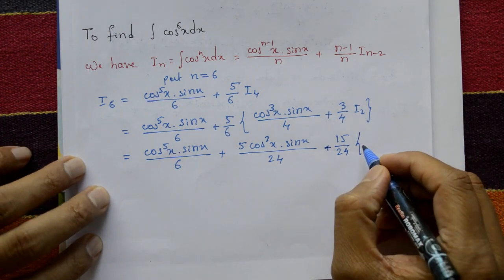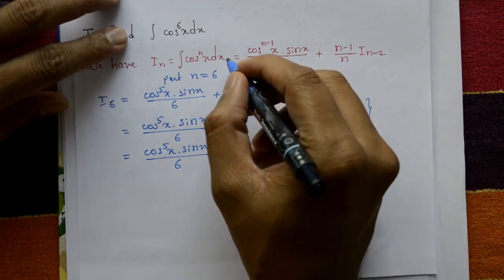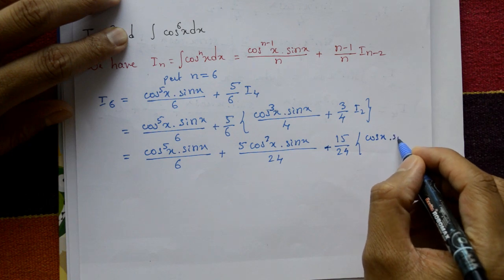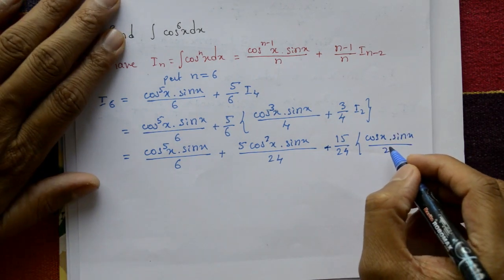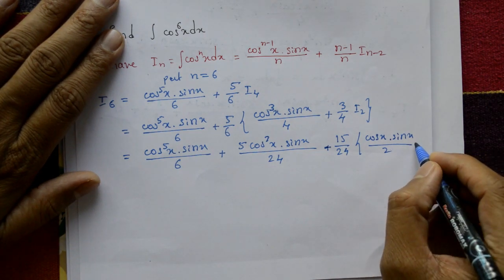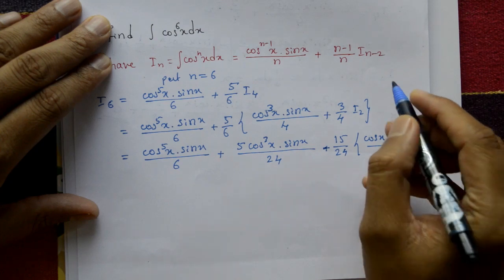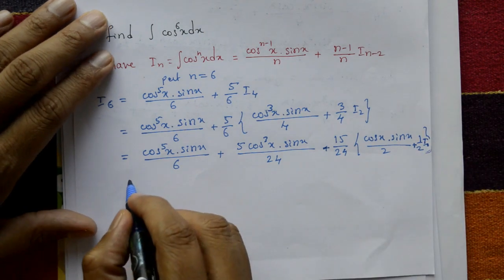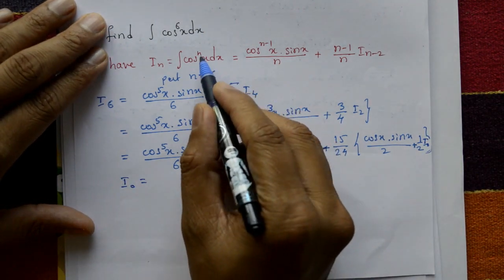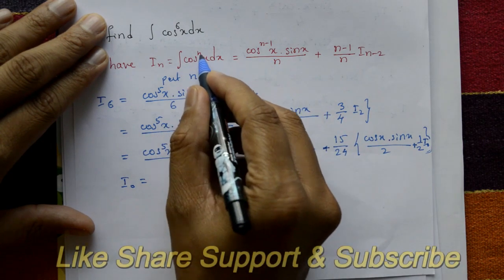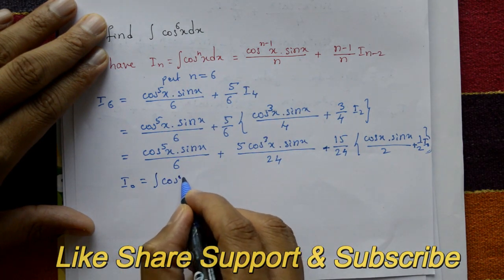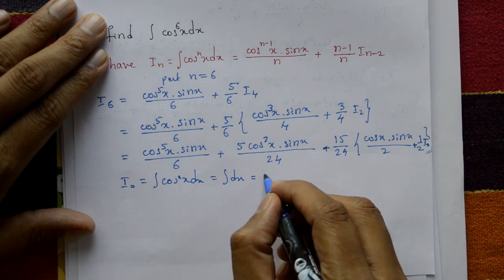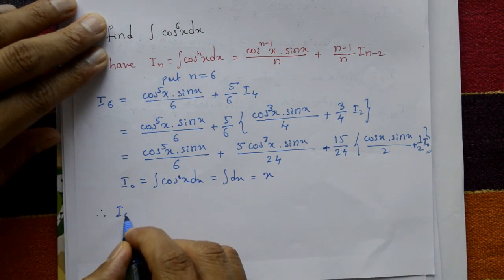Now I_2: put n equal to 2. This gives cos x times sin x divided by 2, plus (1/2) times I_(2-2), which is I_0. Now I_0 means putting n equal to 0, so cos^0 x equals 1, meaning the integration of dx, which is just x.